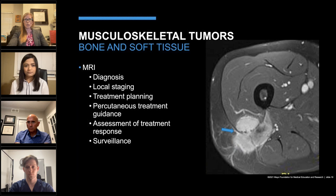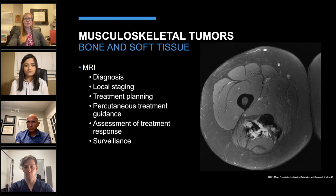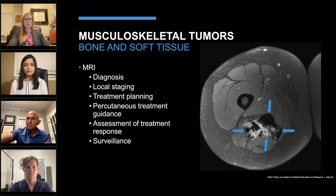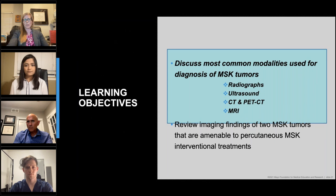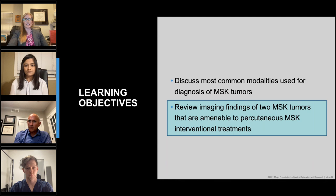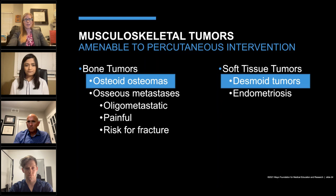In addition to answering these essential staging questions, MRI can also be used for percutaneous treatment planning and, in some instances, even treatment guidance — which Dr. Kallstrom will discuss further. In particular, he'll be discussing desmoid tumors. MRI is also used for assessment of treatment response and surveillance for possible recurrence. Now that I've briefly covered the common imaging modalities for MSK tumor diagnosis, I'll review the imaging findings of two MSK tumors amenable to percutaneous interventional treatment: osteoid osteoma and desmoid tumor.